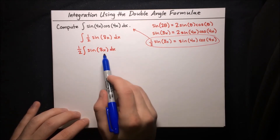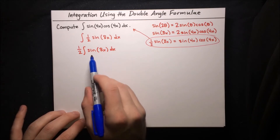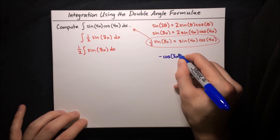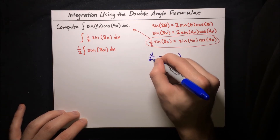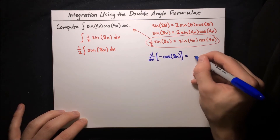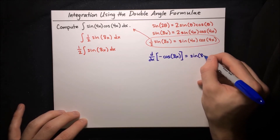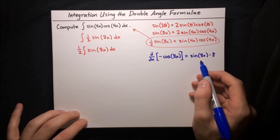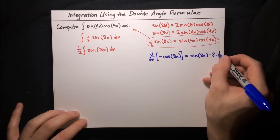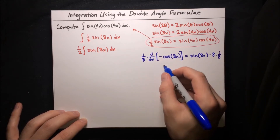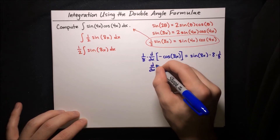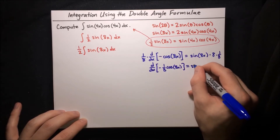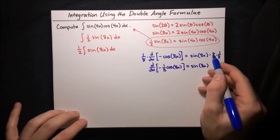So what's the antiderivative of sine of 8x? We know that the antiderivative of sine is negative cosine, so it's tempting to say negative cosine of 8x. But if you differentiate negative cosine of 8x, you have to apply the chain rule, and the result is sine of 8x times 8. Since we just want sine of 8x, we multiply by one eighth to cancel that out. So the derivative of negative one eighth cosine of 8x equals sine of 8x, because the 8 cancels with the one eighth. This is the antiderivative of sine of 8x.